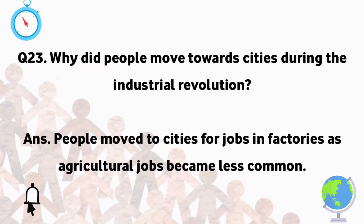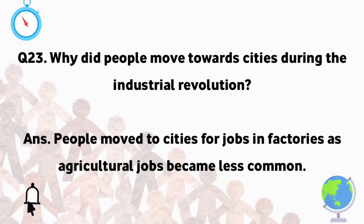Why did people move towards cities during the Industrial Revolution? People moved to cities for jobs and factories as agricultural jobs became less common.